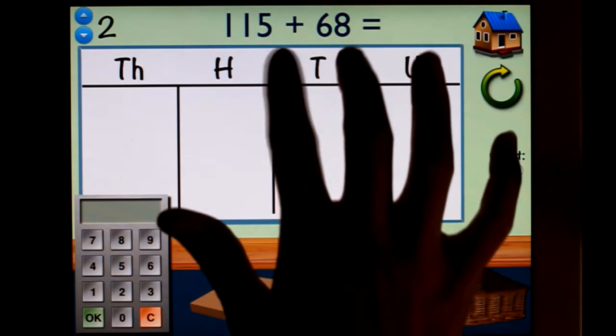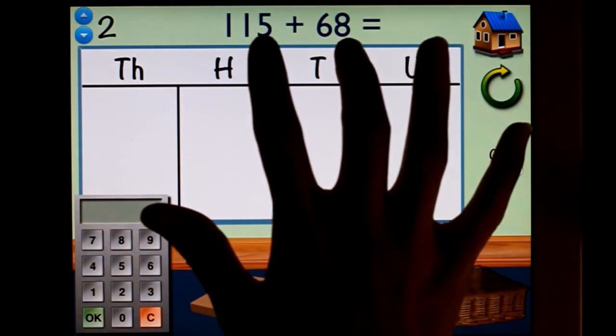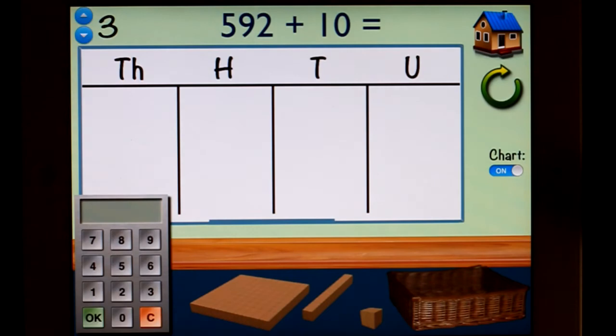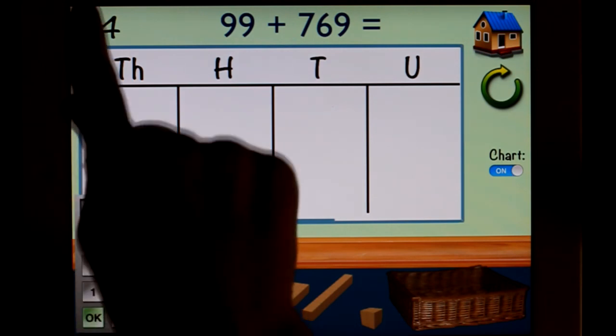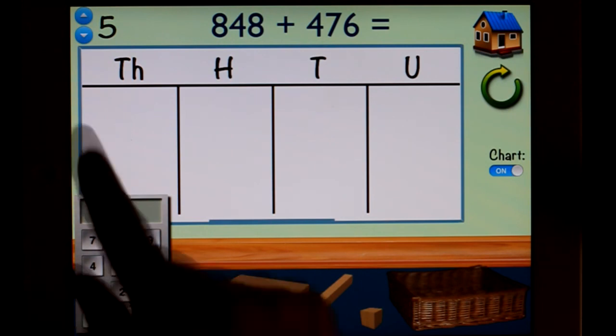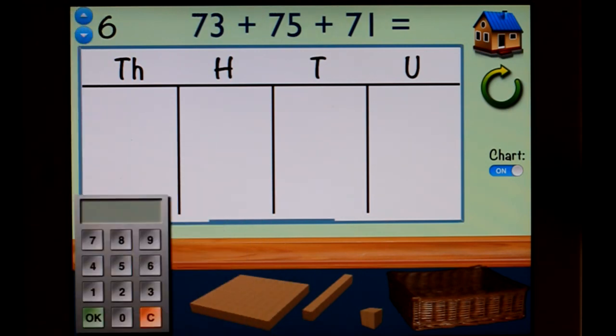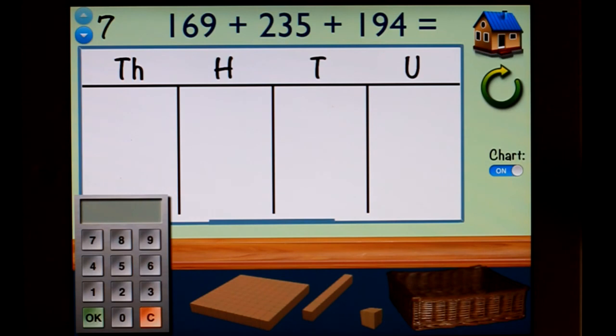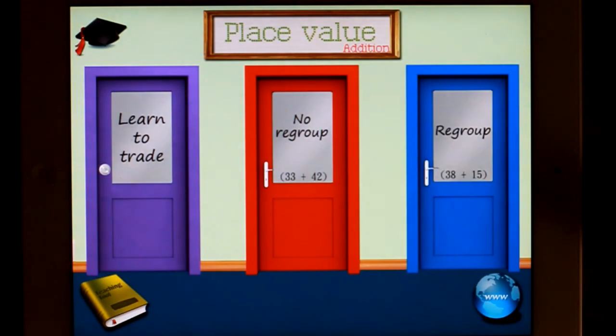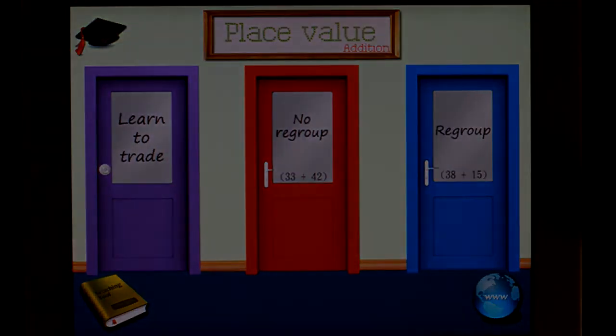Once again, you'll get the loud clapping noise if you get it correct. Let's have a look at level two. Level two, once again, only trading in the units but higher numbers. Level three in the tens column. Level four, multiple regrouping. Level five, obviously up to thousands. And once again, level six with those three add-ins, which of course makes it tricky. Level seven into the hundreds with the three add-ins. Okay, so there's Little Monkey Apps teaching place value addition.